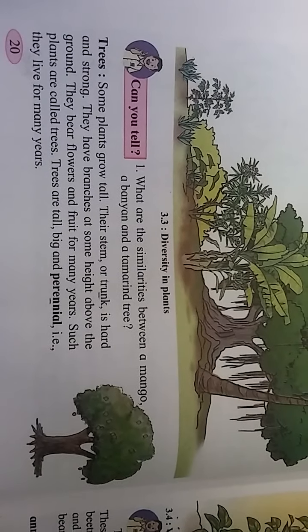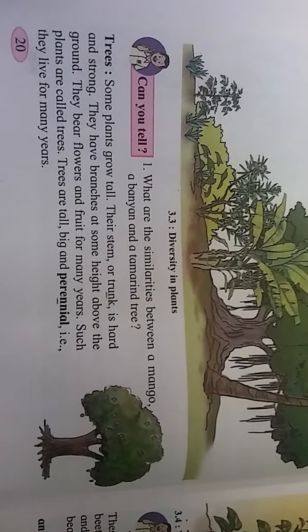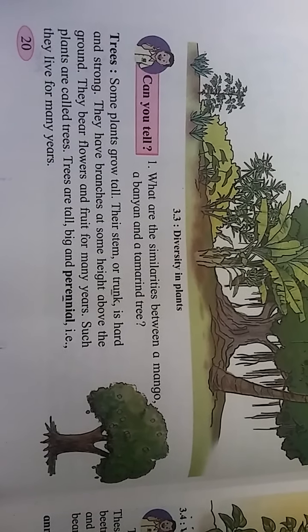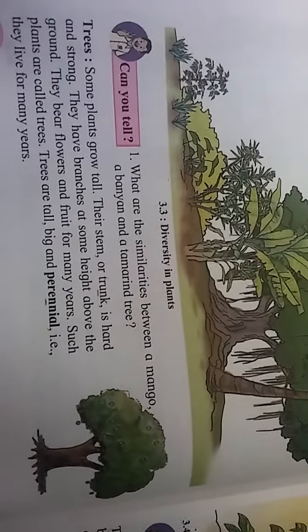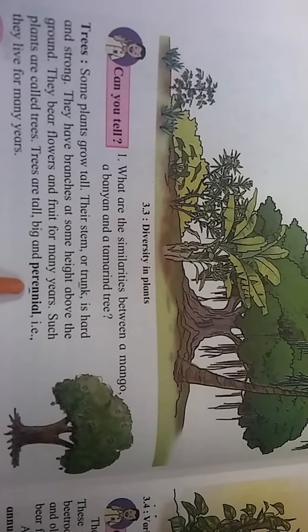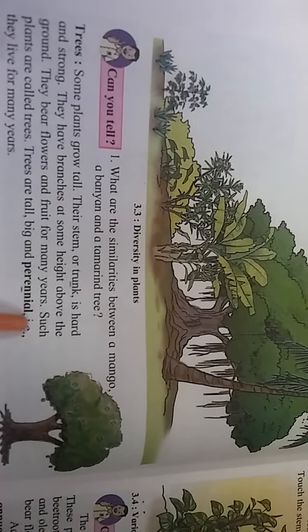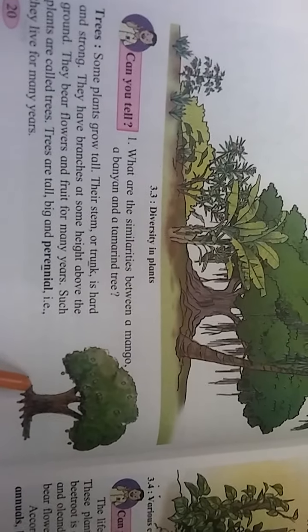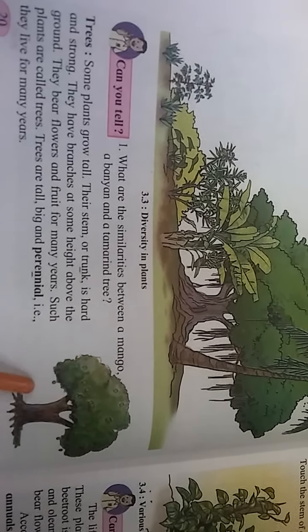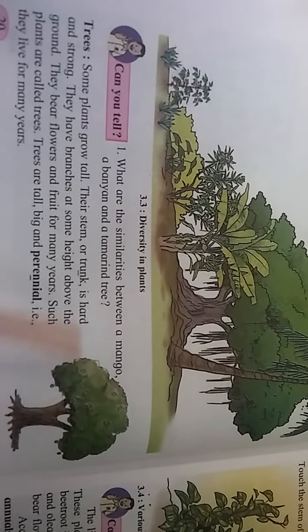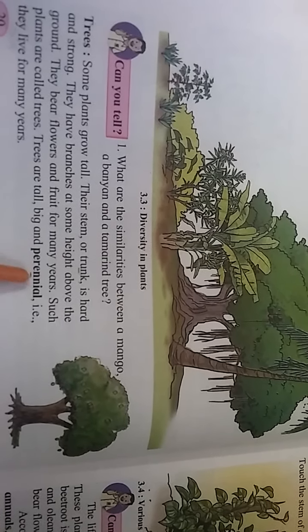Trees are very tall, their branches are at some height above the ground, and they live for many years. That is why they are called perennials. The meaning of 'perennial' means living for many years. The branches of a tree start at some height above the ground.